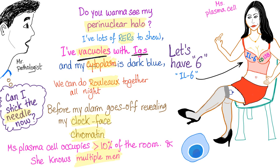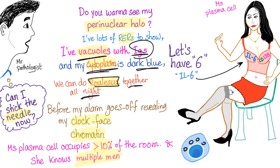'I have vacuoles with immunoglobulins — not necessarily IgG but any immunoglobulin. And my cytoplasm is dark blue. We can do ROLO together all night' — because on blood film or peripheral smear you have ROLO formation. 'Before my alarm goes off, revealing my clock face chromatin' — yes, the plasma cell is described by pathologists as having clock face chromatin.